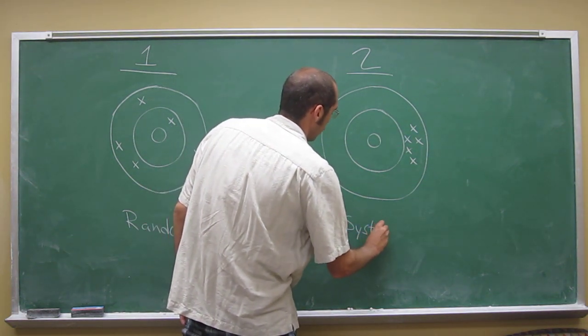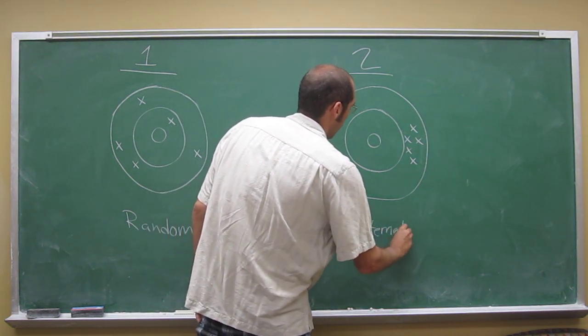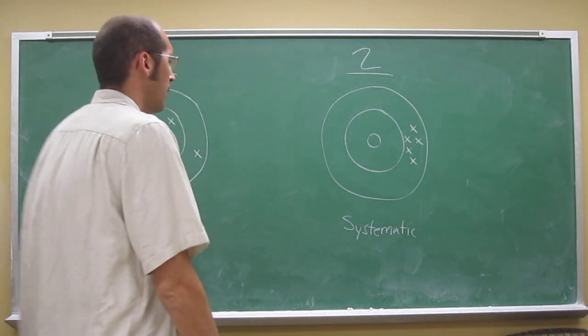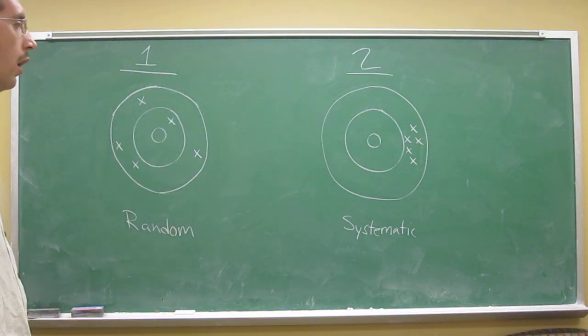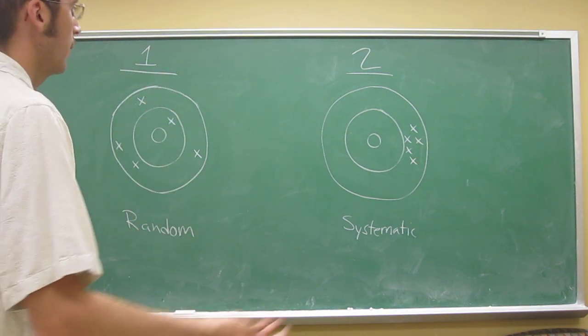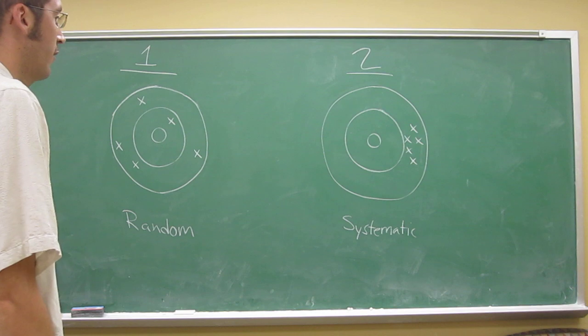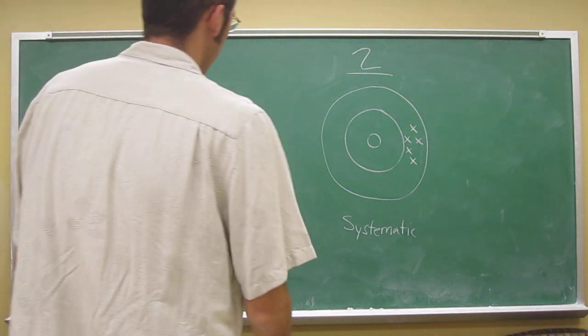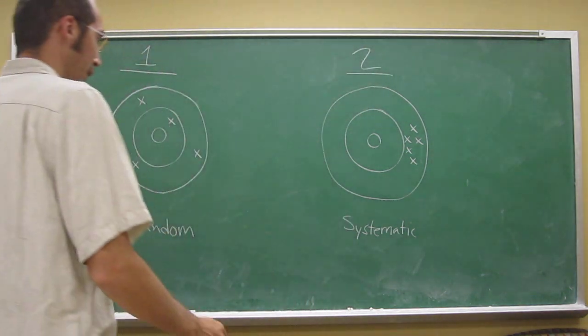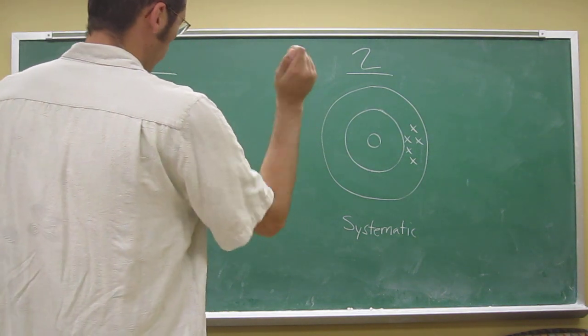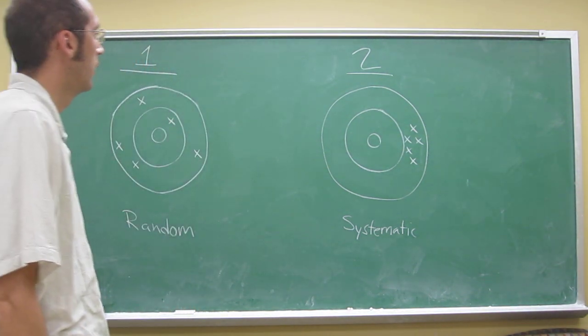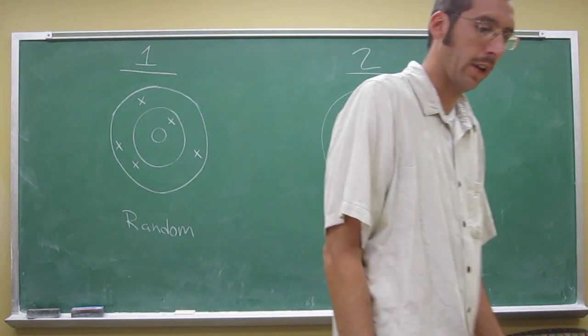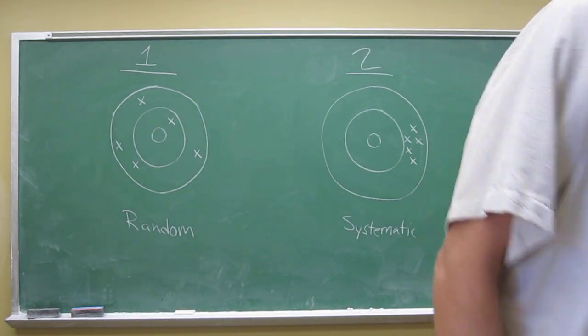That just means there's something consistently wrong in the same way with the measured value. So maybe this player is standing on a hill or something that's forcing them to throw at that part of the dartboard or some other systematic error.